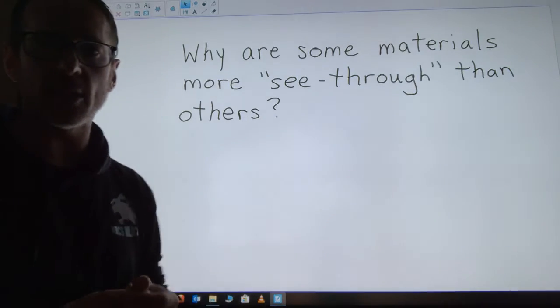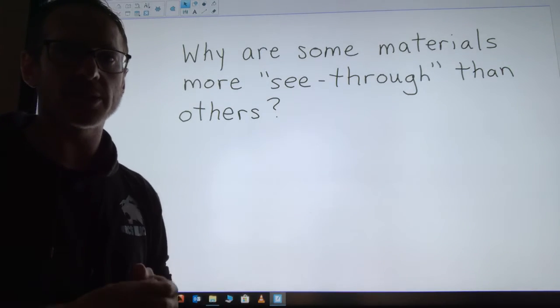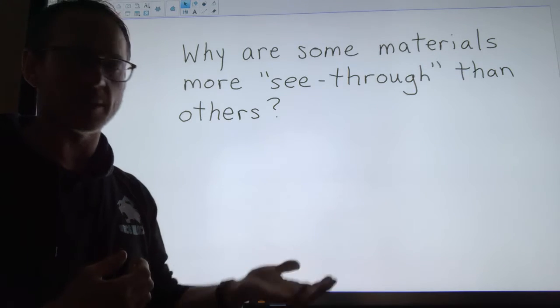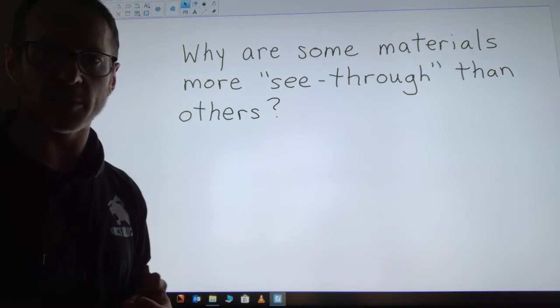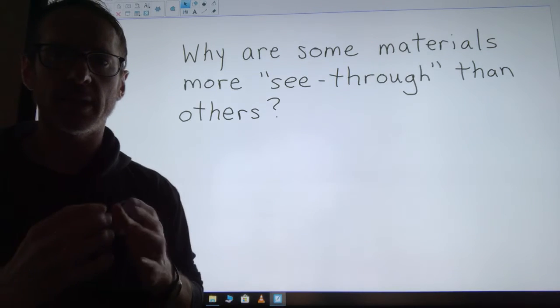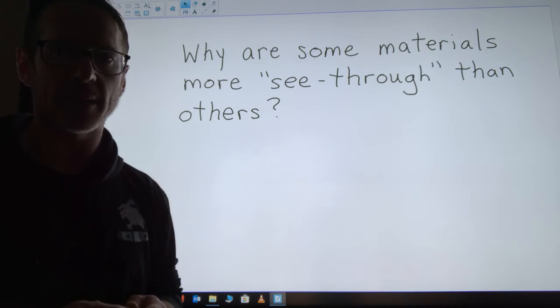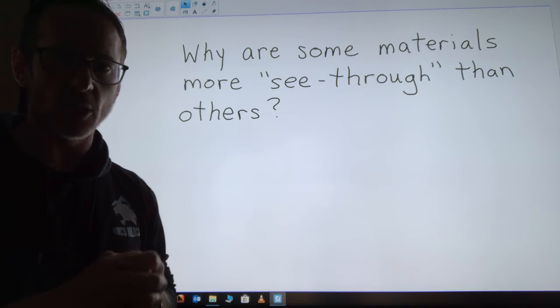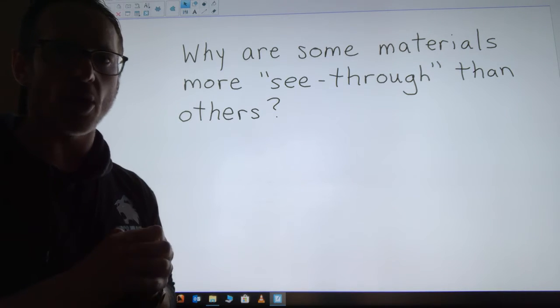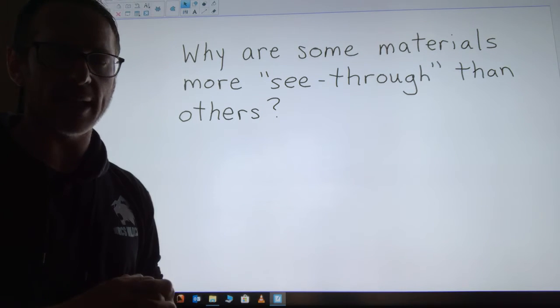Now the question we did on the second video was why—why are some materials transparent, why are some translucent, and why are some opaque? And it has to do with the molecules that make up that material. If they're really closely packed together they will block all of the light. They won't allow any light through.